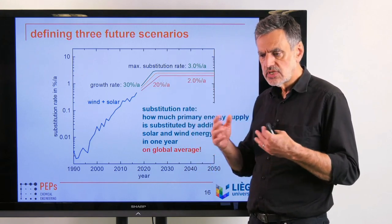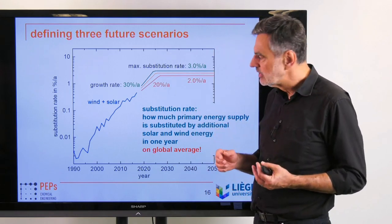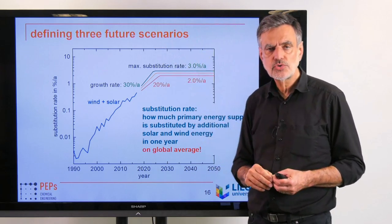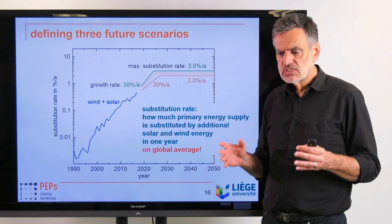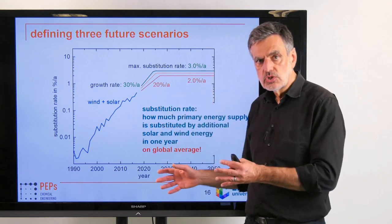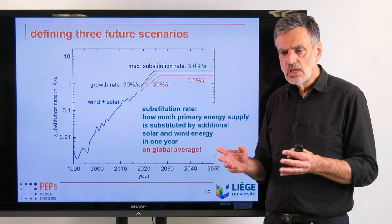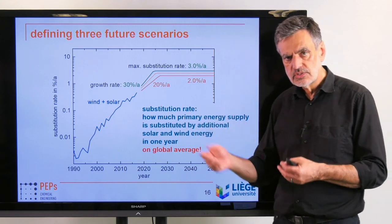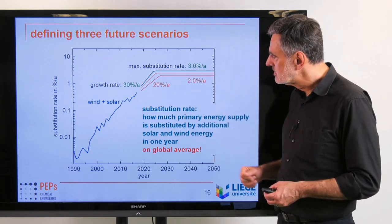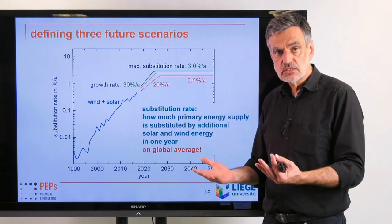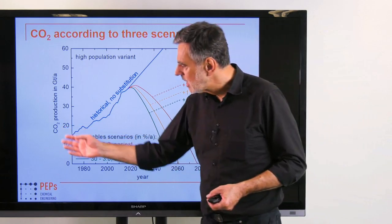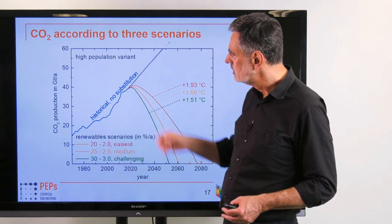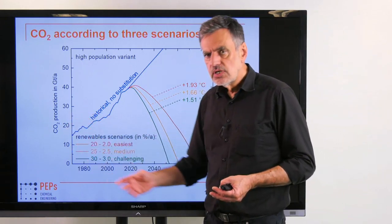With that I would like to finish the topic of world population and build on it regarding the energy transition and food supply. The substitution rate measures how much primary energy supply is substituted by additional solar and wind energy in one year — as a percent per year substituted with sustainable energy on a global average. The substitution rate has developed in a certain way in the past, and we can project it into the future at certain rates, giving us three energy scenarios.